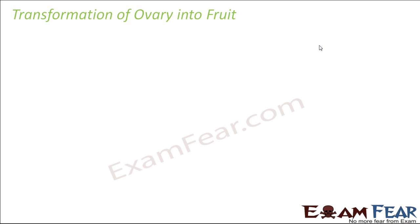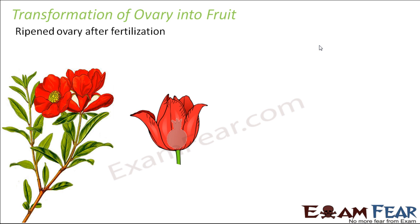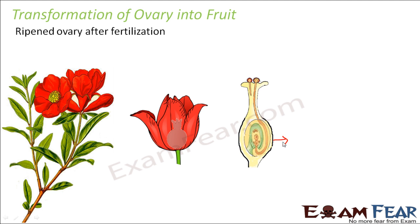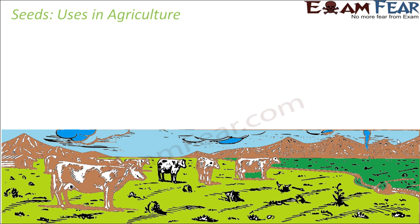Now let us talk about the fruit. A fruit is nothing but a ripened ovary after fertilization. After fertilization, the ovule becomes the seed and the ovary becomes the fruit. Inside the flower, the ovary transforms into the fruit. For example, in a pomegranate, the fruit is the outer structure and inside you have the seeds.